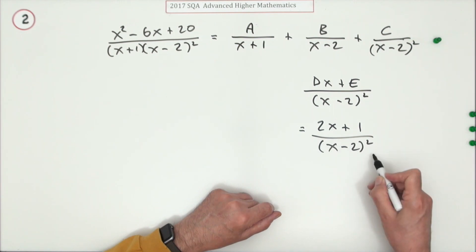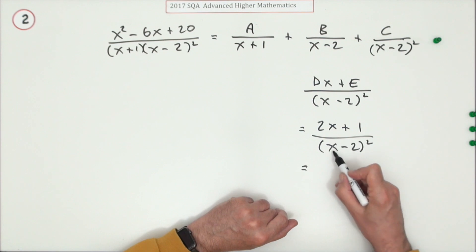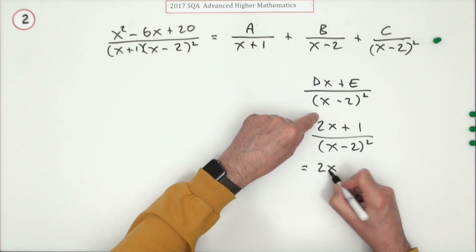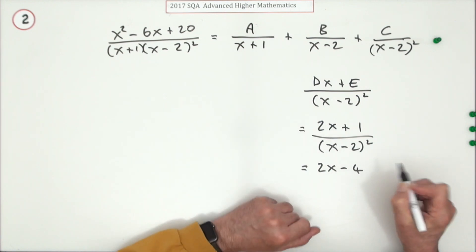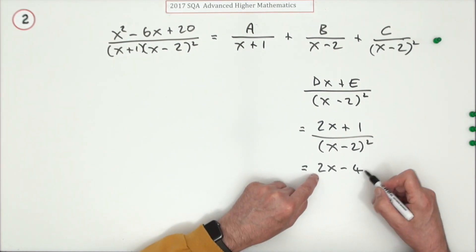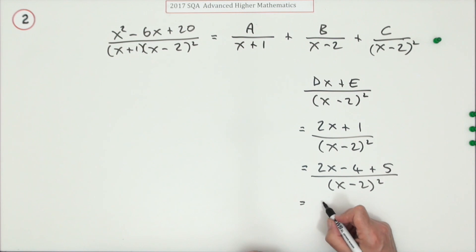You might end up with something like 2x plus one over x minus two squared. However, if you left it like that, you haven't actually finished and you wouldn't get the final mark. Because that really only applies when this is an irreducible quadratic, one that doesn't factorize to integers.